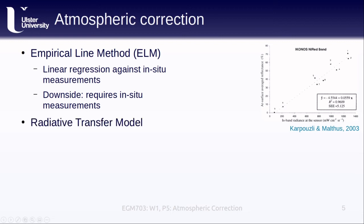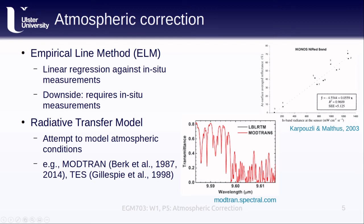The second method that we'll touch on is a radiative transfer model. This is where we actually try to model the atmospheric conditions at acquisition time. While doing the modeling is generally more complicated than the empirical line method, finding the necessary meteorological parameters can be relatively easier than having in-situ measurements of radiance. There are a few software packages available that will do this kind of modeling. One of the main ones is known as MODTRAN, which you can find at the website shown here.